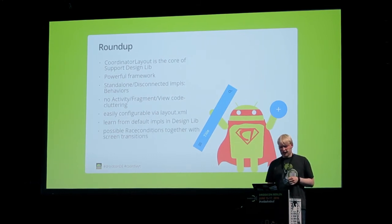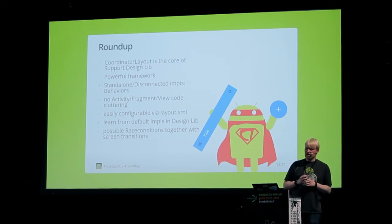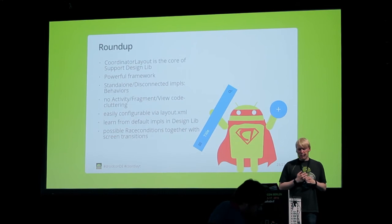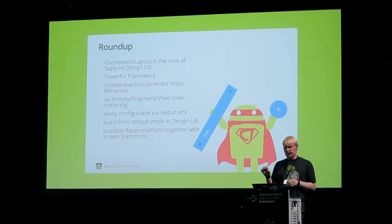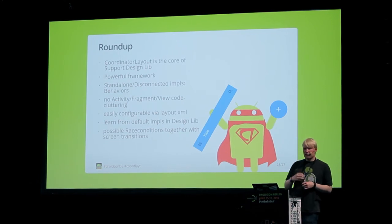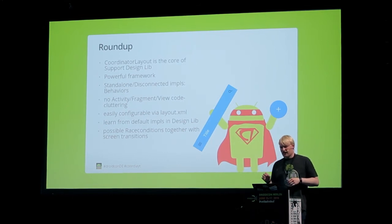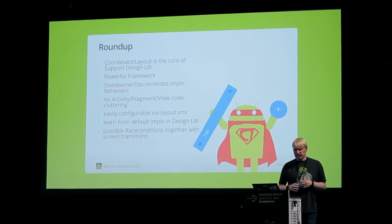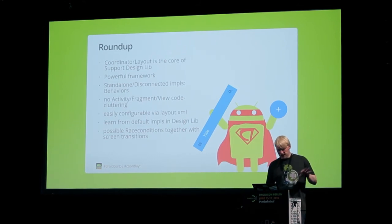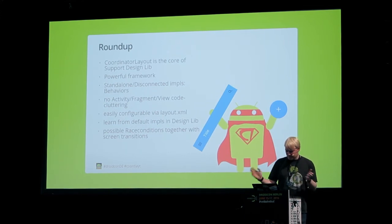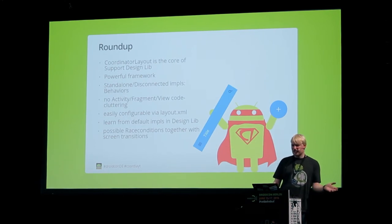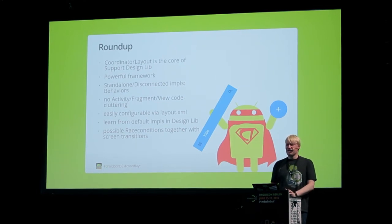One thing I ran into at Jimdo when using behaviors with screen transitions: when you animate a component in with a window transition and it has a behavior applied, the changes from the view transition can make the behavior react to them, and you can get into some really weird conditions. So watch out for that. If you want to learn about screen transitions, have a look at the next talk by Ben Weiss — it covers window transitions and has some really useful tips.